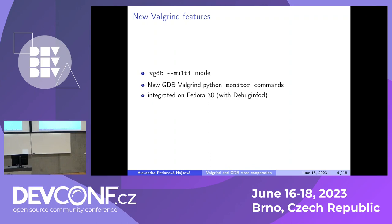The current Valgrind release brings several new features which make connecting to Valgrind easier. With VGDB multi-mode, you don't need to use two terminals to connect to Valgrind anymore. Now you can run GDB and run Valgrind from inside GDB. The other new feature is a Valgrind Python script, which allows you to ask Valgrind about things in a very convenient way. Both are already in Fedora 38 and work out of the box together with DebugInfoD.